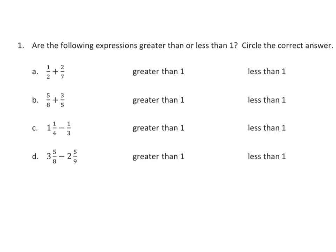The first part: are the following expressions greater than or less than 1? Circle the correct answer. Let's look at A. We see that we have 1 half and another fraction that's less than 1 half. If we want to be 1 or greater than 1, we have to have fractions that are equal to half or greater. Half of 7 is 3.5, and this is less than half, so we're going to circle less than 1.